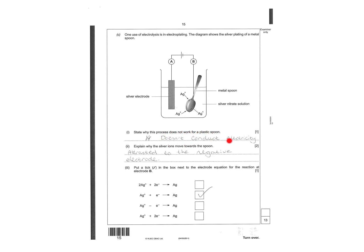State the process that doesn't state why this process doesn't work with a plastic spoon - because it doesn't conduct electricity. Spraying with silver ions move towards the spoon attracted to the negative electrode. That would be Ag+ plus one electron gives you Ag.